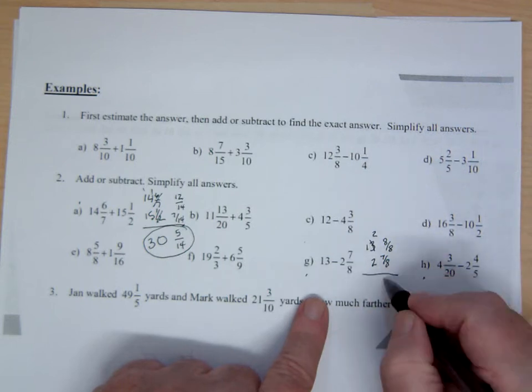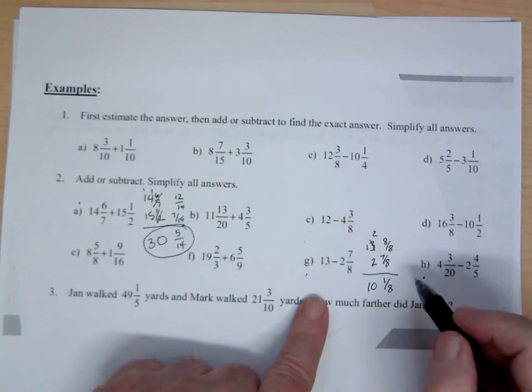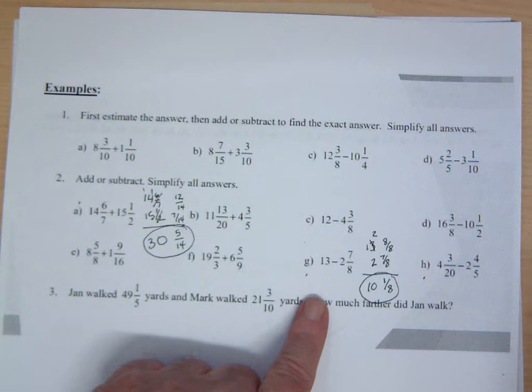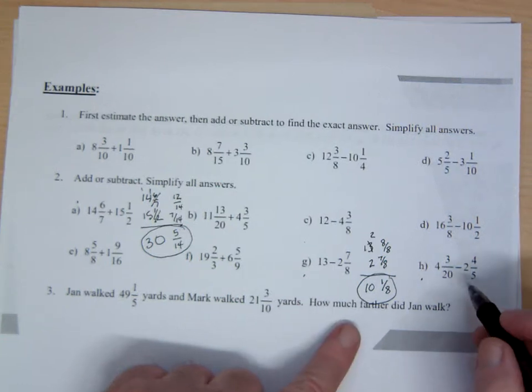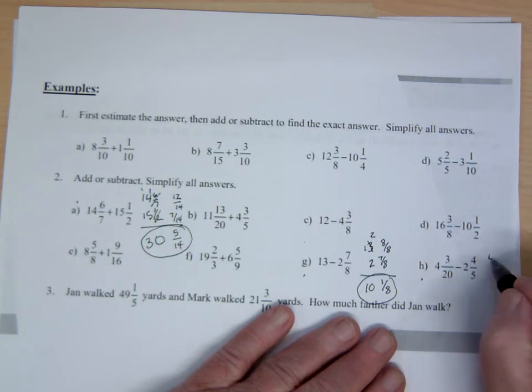So I'm going to borrow 1. But that's going to be 8 over 8. So 13 is really the same thing as 12 and 8 over 8. Now I can subtract. I get 1 over 8 and I get 10. So the answer to this problem is 10 and 1 eighth.